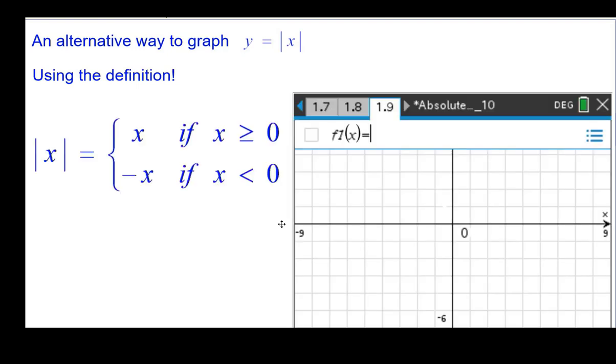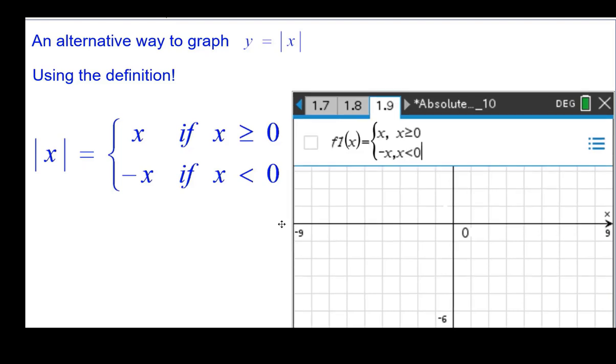An alternative way to graph it, I'm going to use technology here to illustrate this, is to go back and use the definition. And you recall the absolute value of x is equal to x if it's positive or zero, opposite of x if it's negative. So we're going to type that in as a piecewise function into f1 of x.